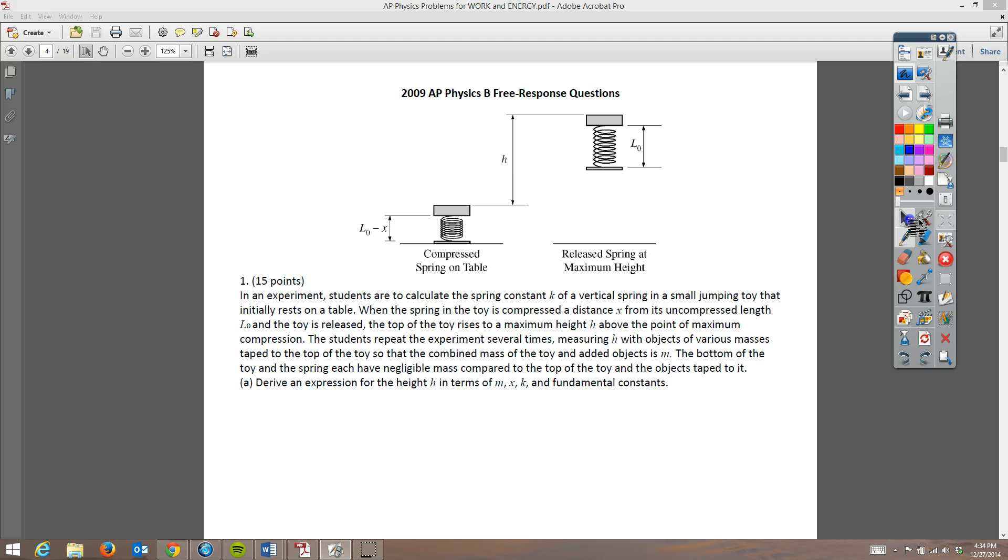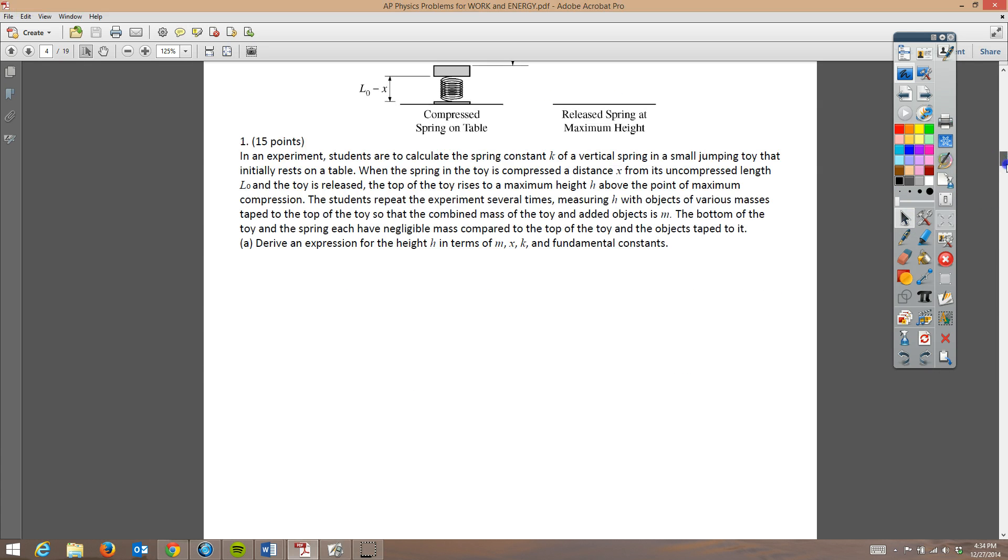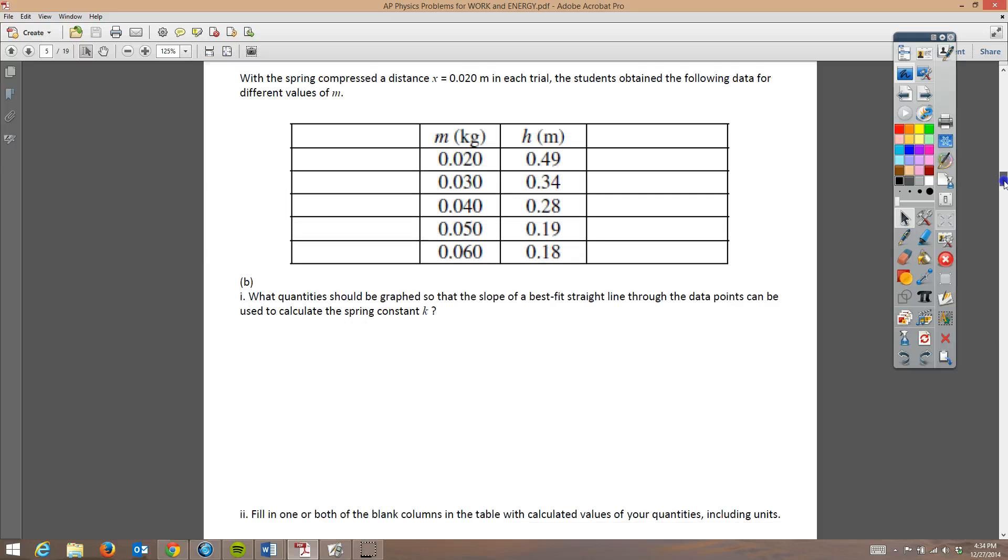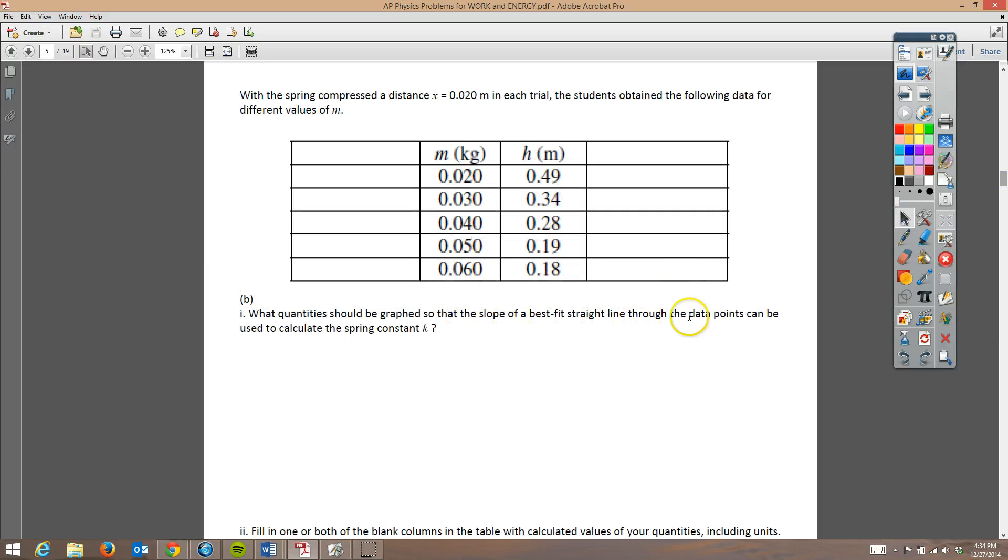For the next part of this problem, they want us to, in part B, it says what quantity needs to be graphed so that the slope of the best fit line through the data points can be used to calculate the spring constant K. So we really need to rewrite our equation again. So we said H is equal to K X squared all over 2 M G.